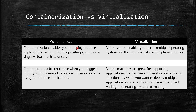A container built on Windows may not work properly when you try to port it to a Linux server, because there is a dependency on the underlying host operating system. Containers are a better choice when your biggest priority is to minimize the number of servers you are using for multiple applications — you containerize a set of apps on a single server. Virtual machines are great for supporting applications that require a full operating system's functionality, when you want to deploy multiple applications on a server, or when you have a wide variety of operating systems to manage.